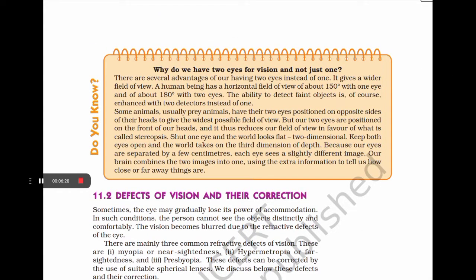Why do we have two eyes for vision and not just one? Having two eyes gives us a wider field of view — about 150 degrees with one eye and 180 degrees with two. The ability to detect faint objects is enhanced with two detectors. Our eyes are positioned at the front of our heads, enabling stereopsis. With both eyes open, the world takes on three-dimensional depth, as each eye sees a slightly different image and the brain combines them to judge how close or far away things are.